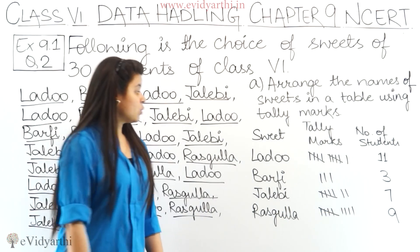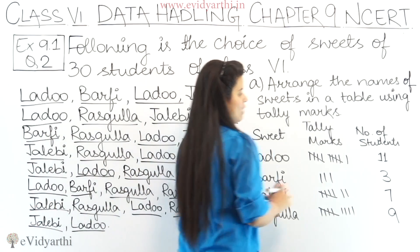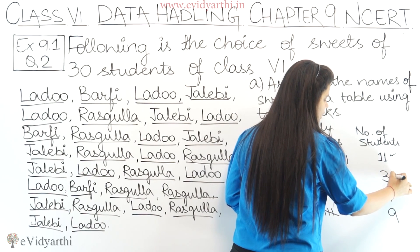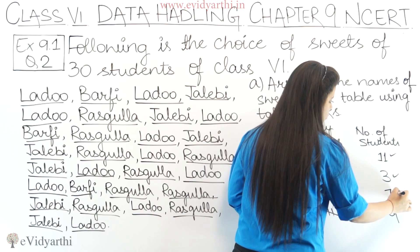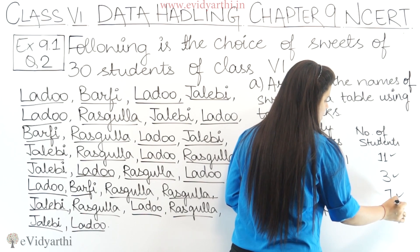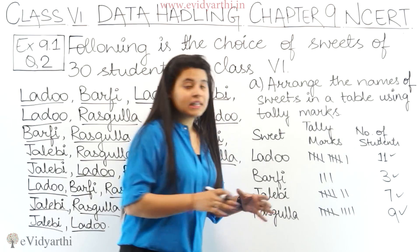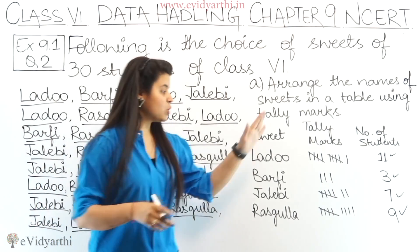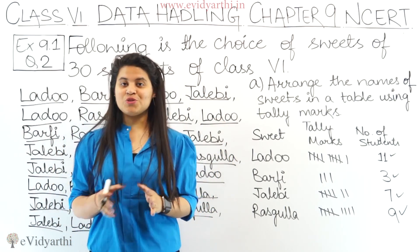Now let's check if we missed anything. Counting all students total: 11 + 3 + 7 + 9 = 30. We have 30 students and in the question it was given as 30 students, so it means we haven't missed anything. This was the first part of this question.